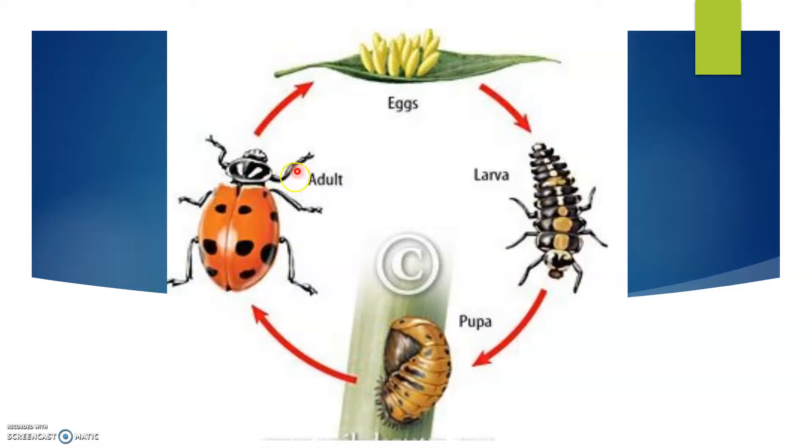The fourth life stages are of ladybug. First is eggs, eggs turn into larva, larva turns into pupa, and pupa turns into adult ladybug.